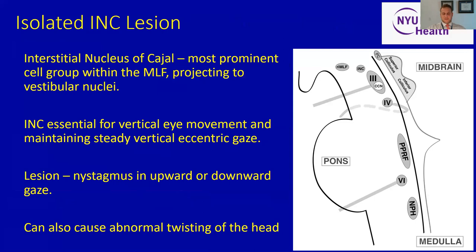Finally, isolated INC lesions — interstitial nucleus of Cajal lesions. This is one of the most prominent cell groups within the medial longitudinal fasciculus, with projections to the vestibular nuclei. It's essential for vertical eye movement and maintaining vertical eccentric gaze in a steady manner. A lesion to it can provoke nystagmus in upgaze or downgaze, as well as abnormalities of head twisting similar to torticollis. There has been thought that stimulation of the INC in the future could help treat individuals who have cervical dystonia or a forced dystonic position of their cervical musculature.